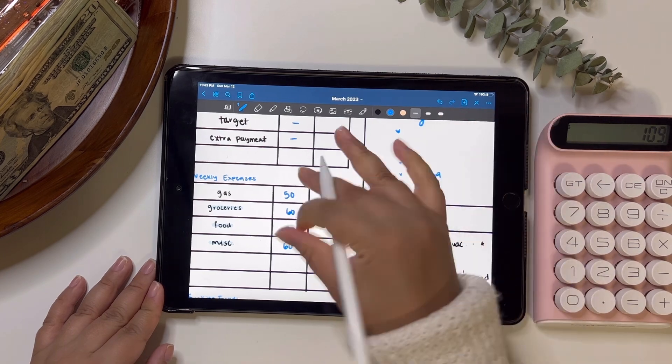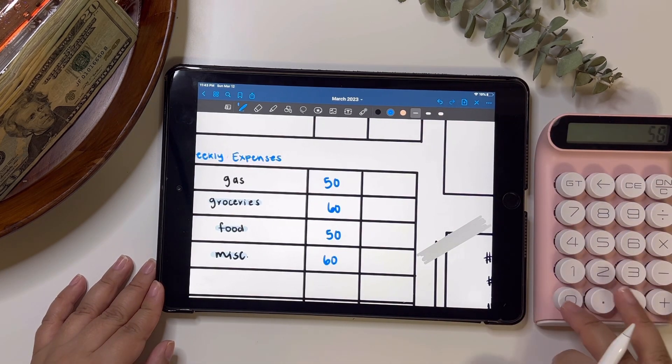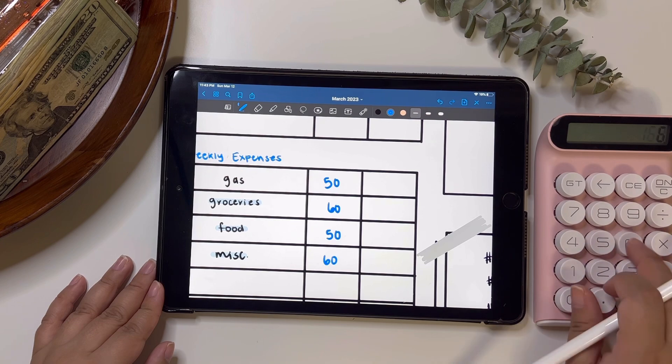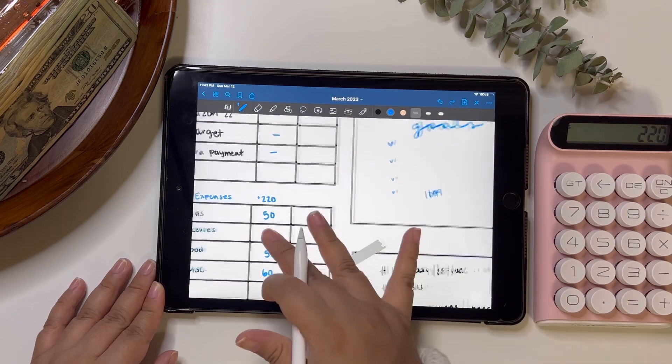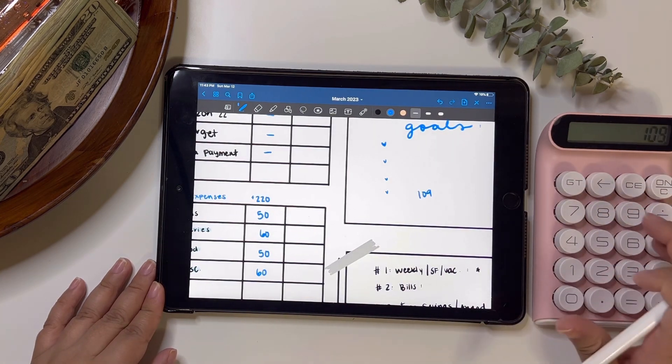So that leaves us with $109. So this is a total of $50, $60, $50, and $60. So weekly expenses come out to $220. And we're left with $109.